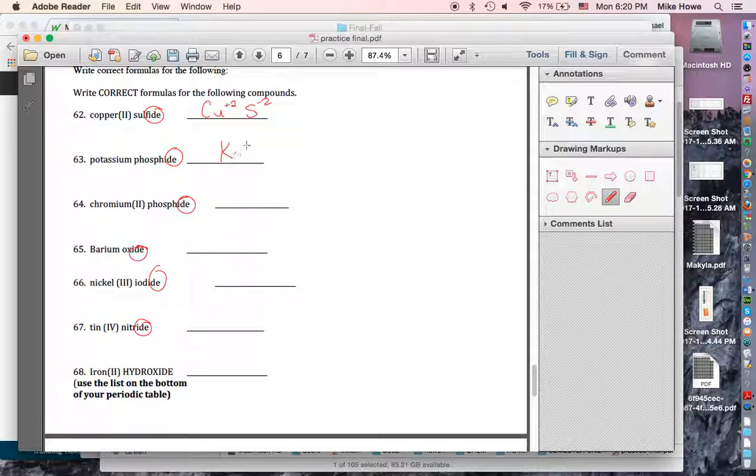Potassium phosphide, you'd have K, you'd have P. P's got 5 valence electrons, -3 charge, going to gain 3. Potassium has 1 valence electron, it's going to lose 1, so they're opposite but not equal, so I need to multiply the 1 by 3.